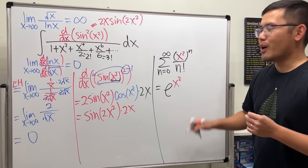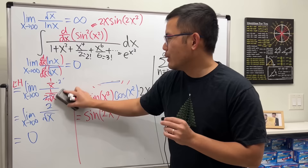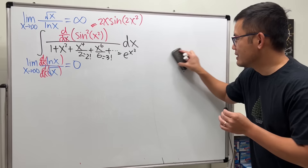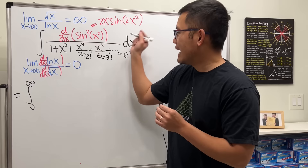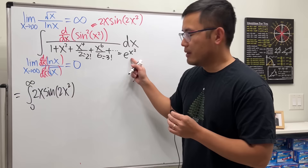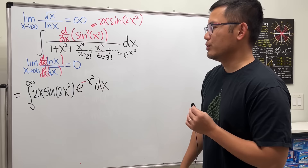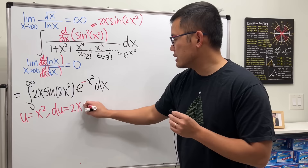Let's clean this up and focus on the integral. We have an improper integral going from 0 to infinity. We put down 2x·sin(2x²), and we bring up the e^(x²) denominator as e^(−x²). Now for integration, let's do a u-substitution. Let u = x², so differentiating both sides gives du = 2x dx, which appears right here — very nicely set up.